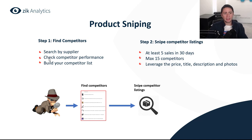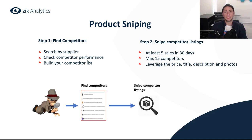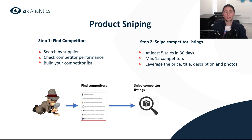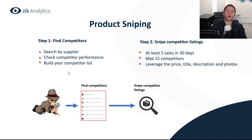After you find a seller, you have to check the competitor performance. Make sure there are enough products and this seller has enough successful listings and good performance, because you don't want to waste time following sellers with very bad performance. You always want to learn from people who are better than you — look for sellers with a lot of sales, optimized titles, high profit margins and so on. Then you build your own competitor list.